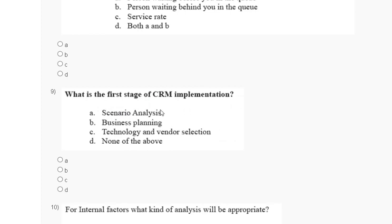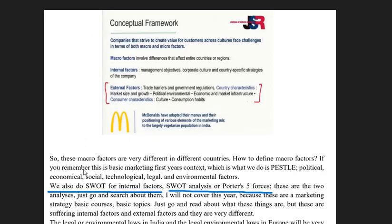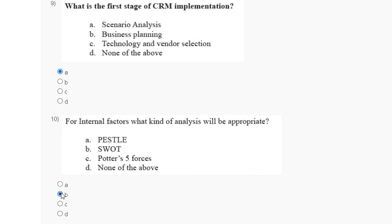Question number ten: for internal factors, what kind of analysis will be appropriate? First: PESTLE. Second: SWOT. Third: Porter's five forces. Fourth: none of the above. The explanation notes that SWOT is used for internal factors, while PESTLE and Porter's five forces are used to analyze external factors. So the correct answer for question number ten is option B — SWOT analysis. Thank you guys.